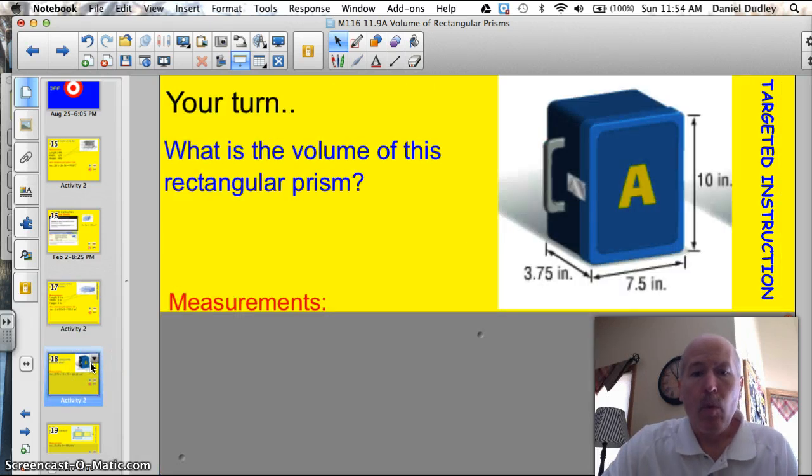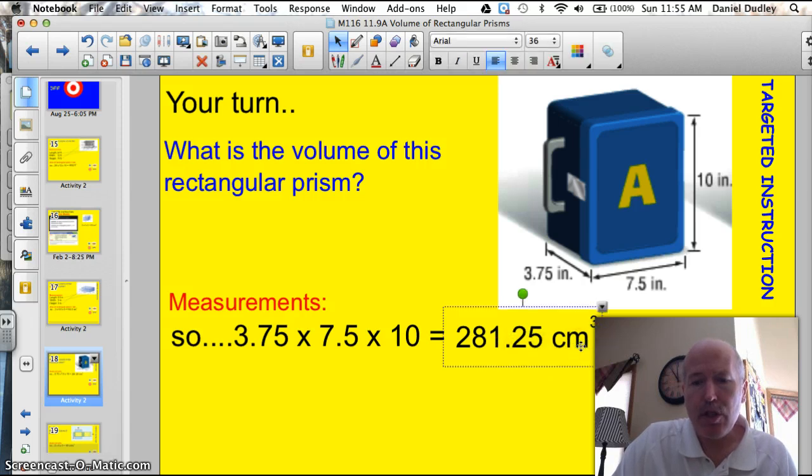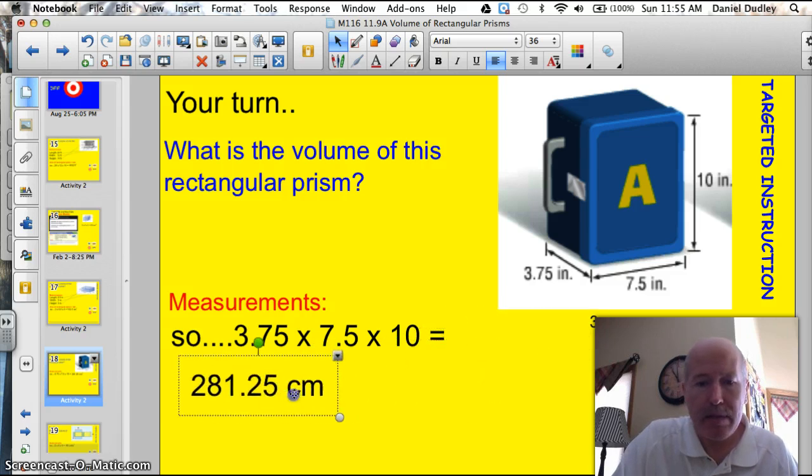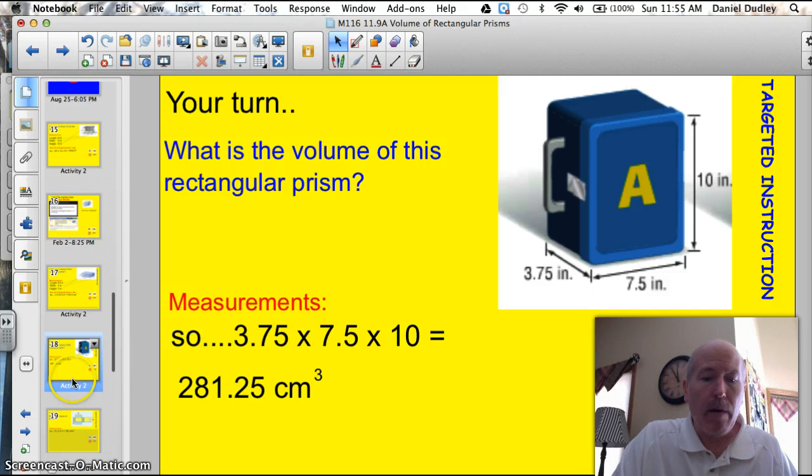Your turn. What is the volume of this rectangular prism? Go ahead and pause it and grab your calculator. I see dead people. It's been a while since I threw that one at you. Let's see how you did. Pop the three measurements in. 3.75 times 7.5 times 10. You get 281.25 centimeters cubed. Awesome. And I'm just going to take and throw that answer right down here in case my picture is in front of it so you can see it. Good job. I forgot the cubed. Make sure it's right.